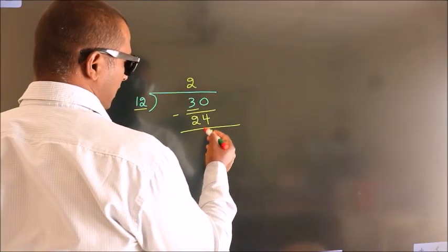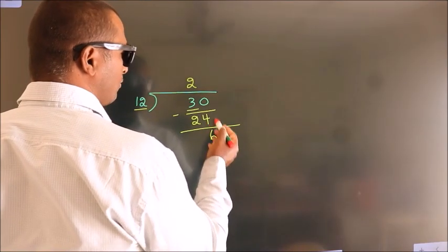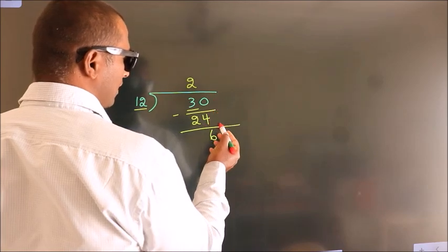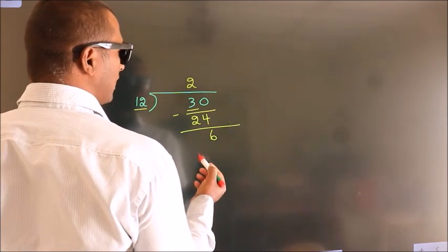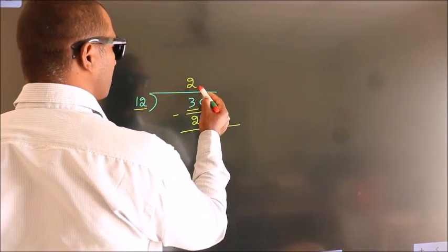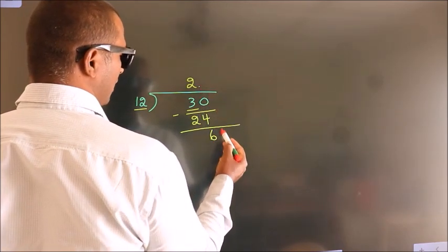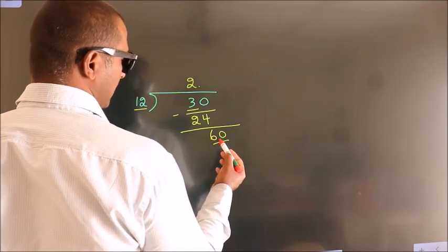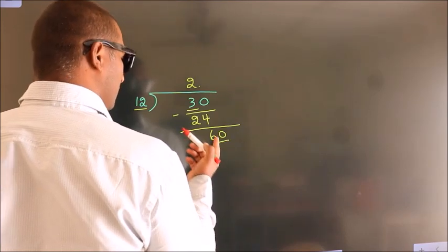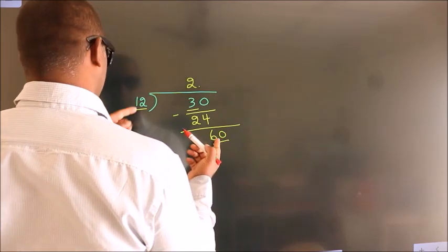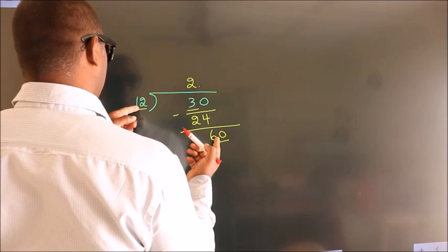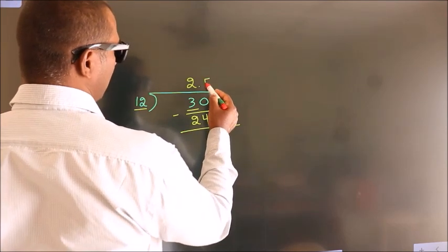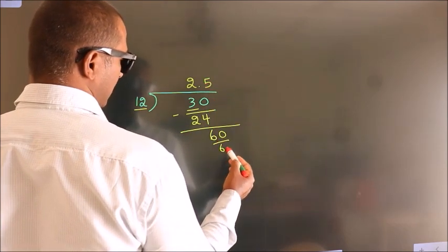After this, there are no more numbers to bring down. So what we do is put a dot and take 0, making it 60. When do we get 60 in the 12 times table? 12 fives are 60.